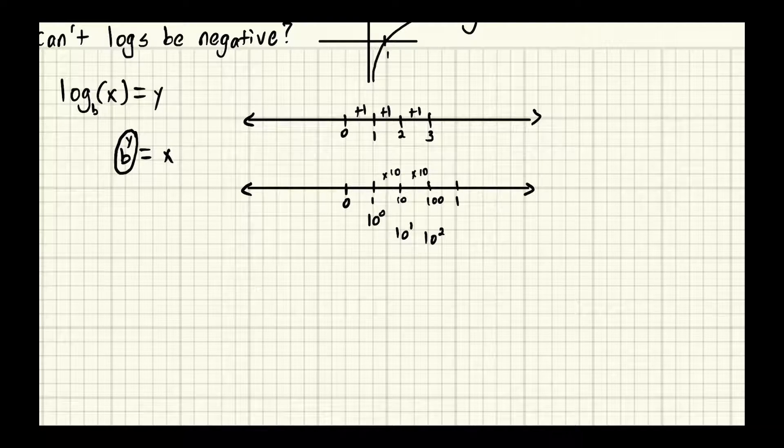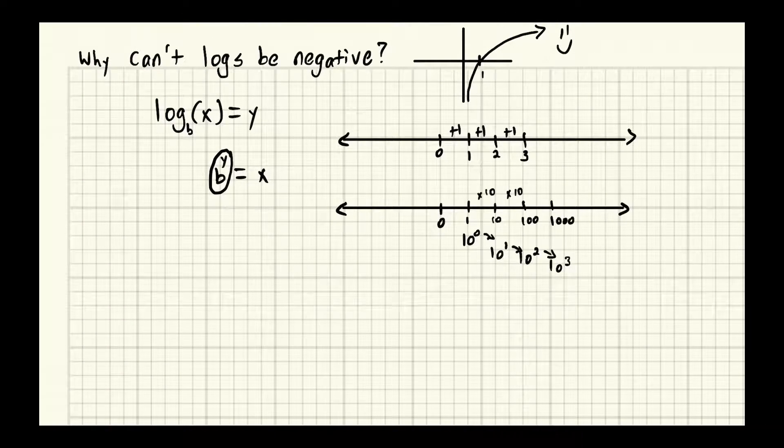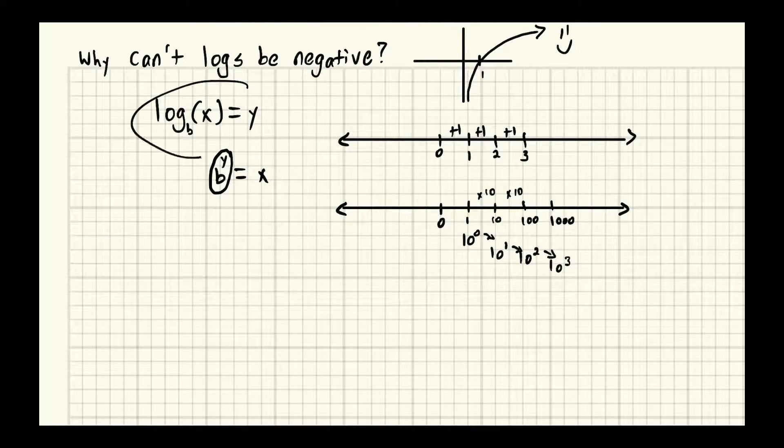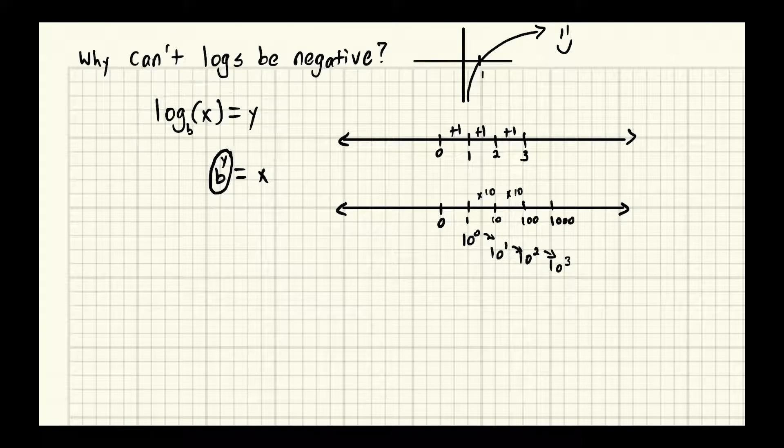That's 10 cubed. And look at this, we have a plus one kind of relationship. One, two, three. These point to each other. And so when we're talking about logs that can be turned into exponents, we're talking about moving around on a number line like this.